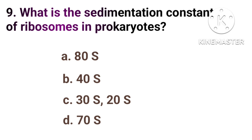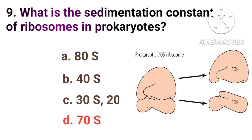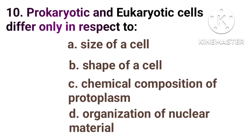What is the sedimentation constant of ribosomes in prokaryotes? Option A, 80S. Option B, 40S. Option C, 30S and 20S. Option D, 70S. The correct answer is Option D, 70S.